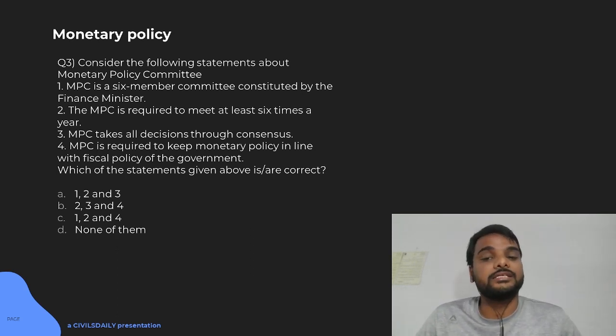That is for each quarter once. So, two will also not be true. MPC takes all decisions through consensus. This normally does not happen because in MPC we also have outside members from the RBI. We have three from RBI - governor, deputy governor and executive director - and three from outside. So, often they do not agree with each other. They will take through voting and if they come equal then RBI governor takes a casting vote.